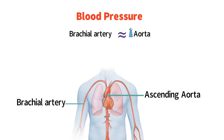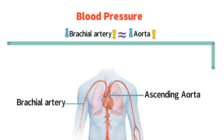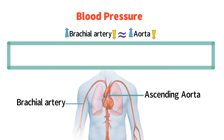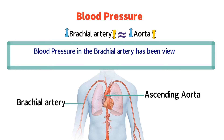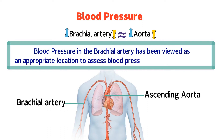Similarly, increases or decreases in blood pressure in the aorta result in corresponding changes in blood pressure in the brachial artery. For these reasons, blood pressure in the brachial artery has been viewed as an appropriate location to assess blood pressure in the arterial system.